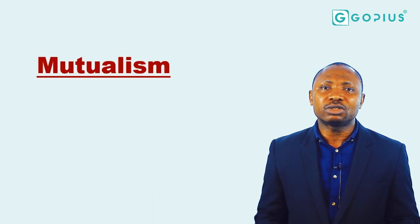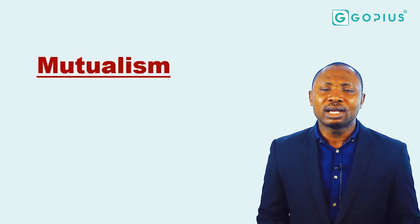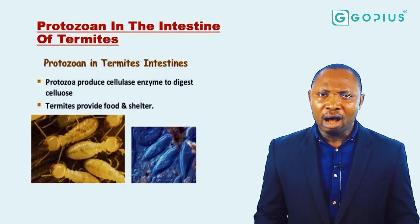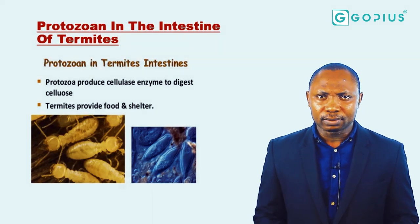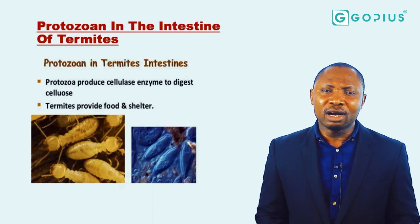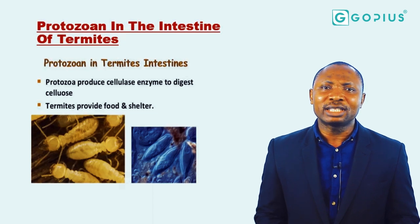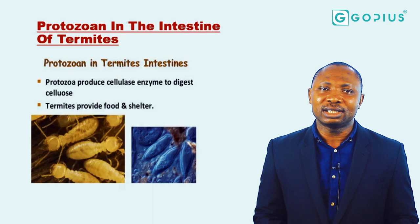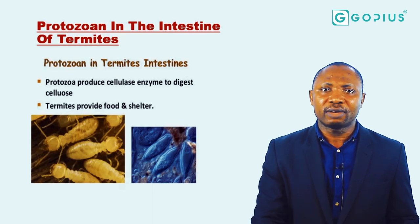The next type is mutualism. Mutualism is a situation whereby two organisms gain from each other positively. The first example is protozoan in the intestine of termites. The protozoan gets protection and food from the termites. In return, the termite gains because the protozoan helps break down cellulose so that the body can digest it. That's how the two of them gain from each other.